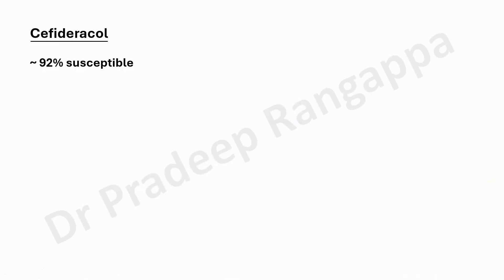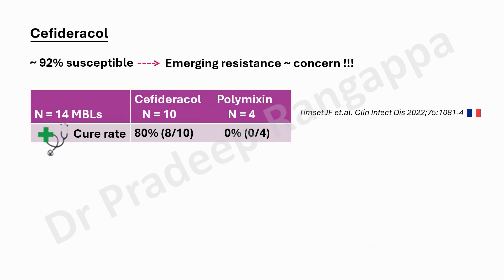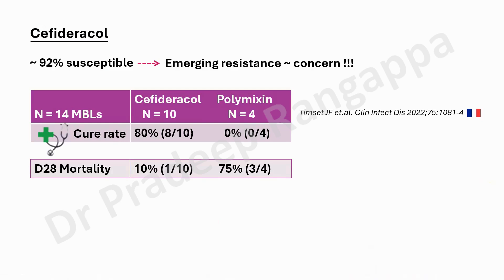Regarding evidence for cefiderocol: 92% of NDM/MBL CREs were found susceptible to cefiderocol. However, there is a concern about emerging resistance. A small French study looked at 14 MBLs — 10 in cefiderocol, 4 in polymyxin. Clinical cure rate was 80% in cefiderocol and 0% in polymyxin; day-28 mortality was 10% in cefiderocol and 75% in polymyxin. This is why colistin-based combinations have been removed as the drug of choice for MBL or NDM CREs. Do not use colistin or polymyxin combinations for NDM/MBL CREs.